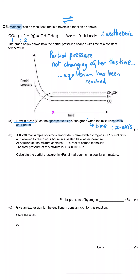In part B, a 0.23 mole sample of carbon monoxide is mixed with hydrogen in a 1:2 mole ratio. That means there must be twice as much hydrogen as carbon monoxide, so we start with 0.46 moles of hydrogen.